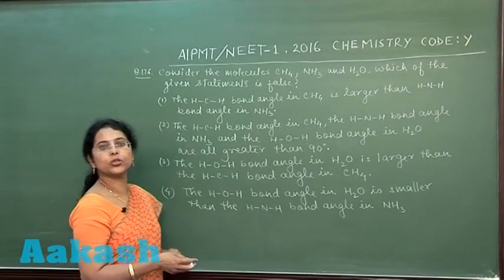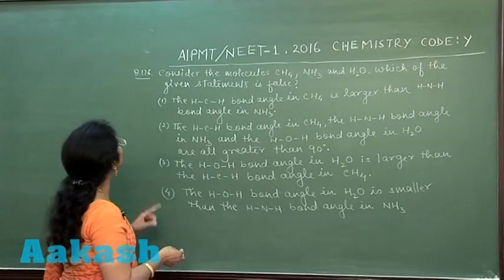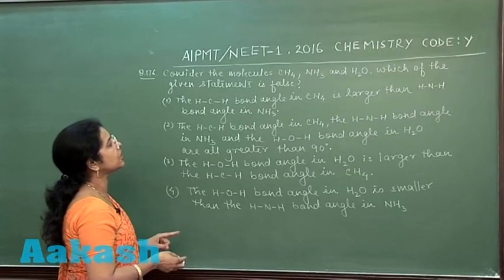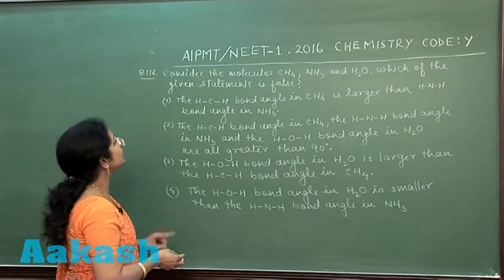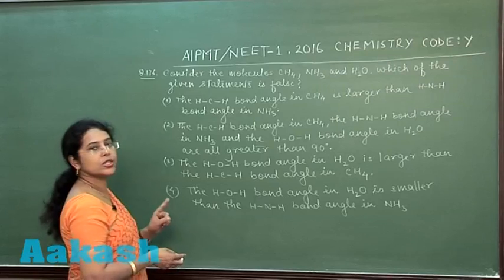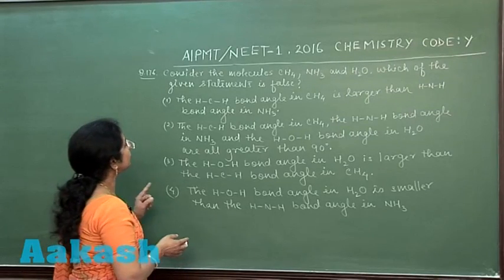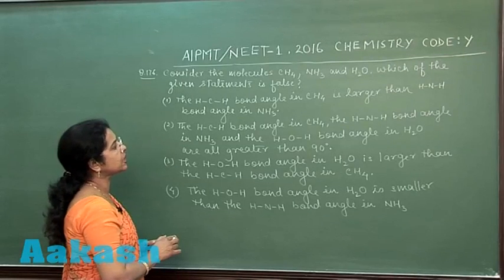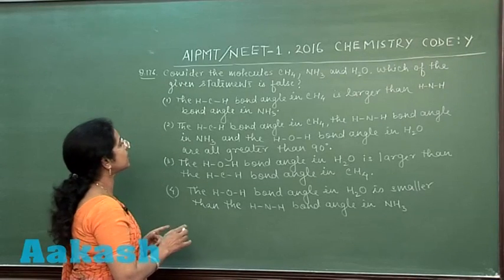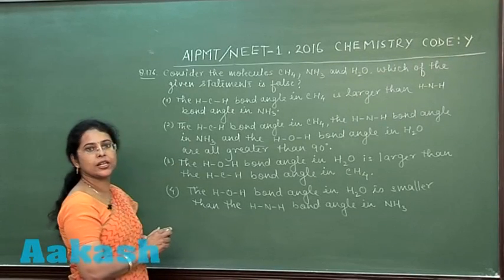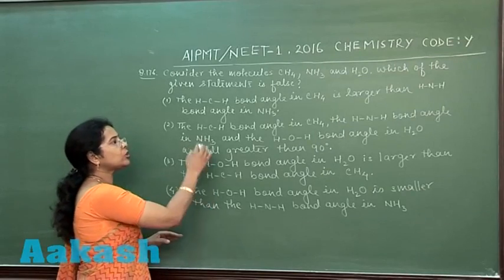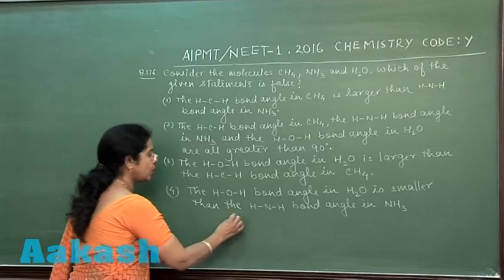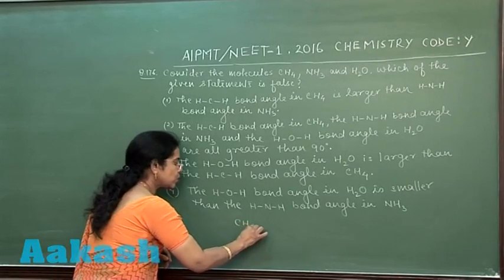Moving to question number 176: consider the molecules methane, ammonia, and water — which of the given statements is false? The first statement is the HCH bond angle in methane is larger than the HNH bond angle in ammonia. In fact, all the options are related to bond angle, so first we should know the bond angle in each case.